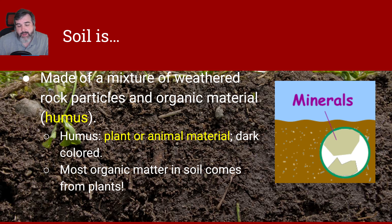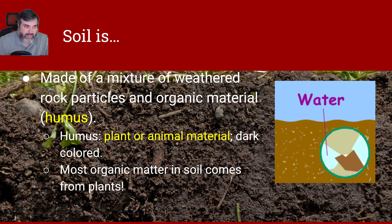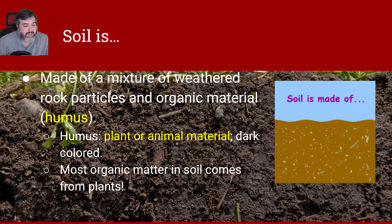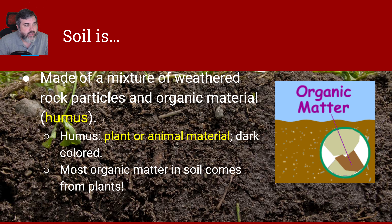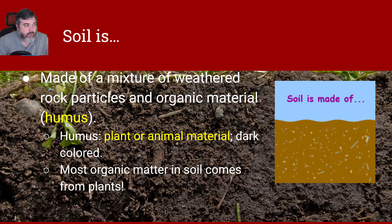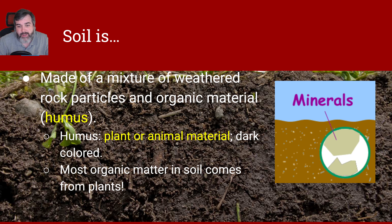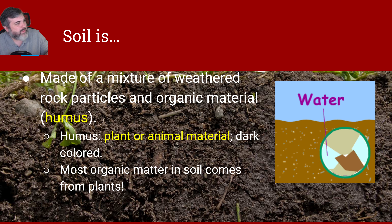Soil is made up of a mixture of weathered rock particles and an organic material called humus. It looks a lot like hummus, but that's the chickpea spread. This is humus — it's that dark black part of the soil. It's organic matter; it comes from living things. Humus is plant or animal matter and is usually colored dark because organic matter typically comes from mostly plants, but it could be from other things too.